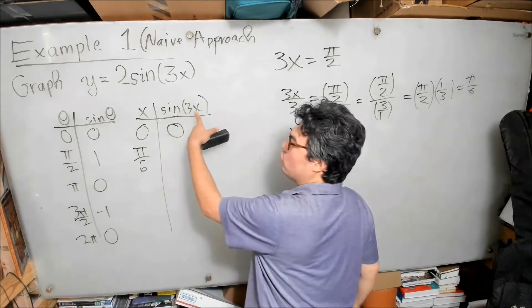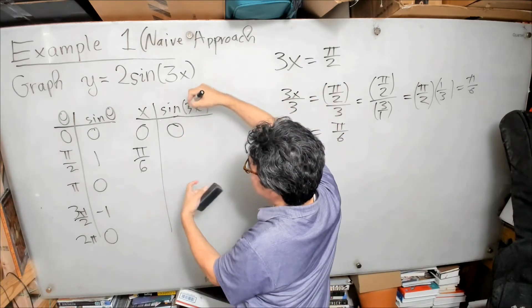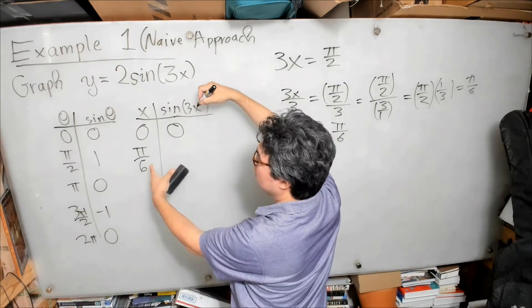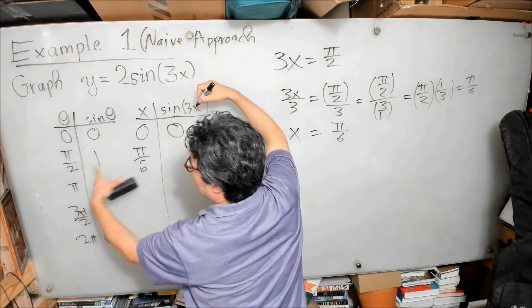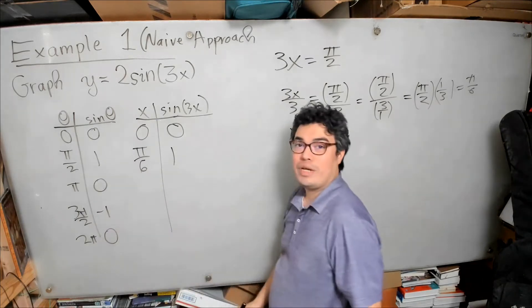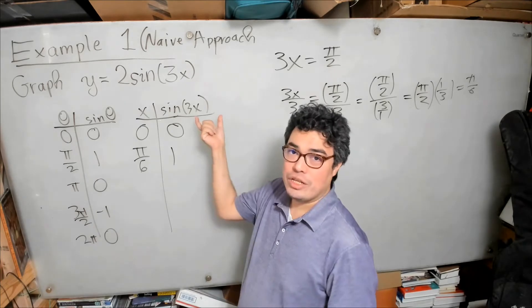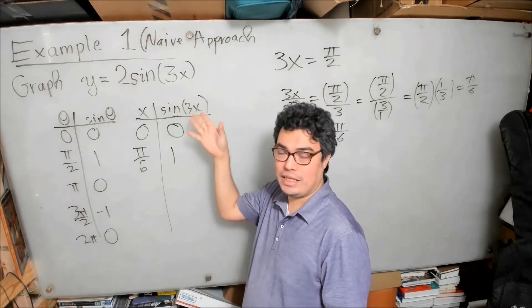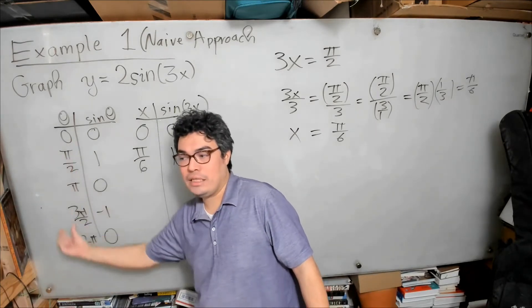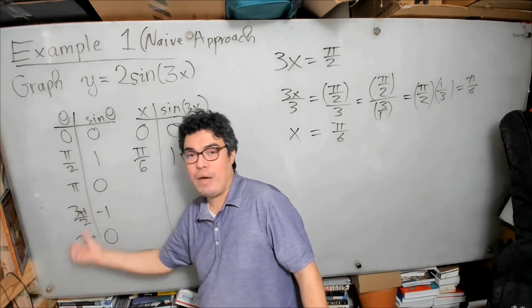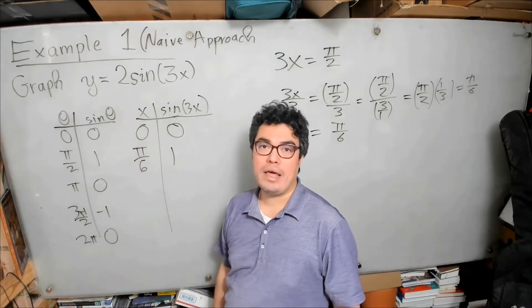I chose x = π/6 so that 3x equals π/2. Since sine of π/2 is 1, we get that nice value. What the naive approach does is match the argument of the sine to the nice theta values we know, so we can build a table that also has those nice sine values.